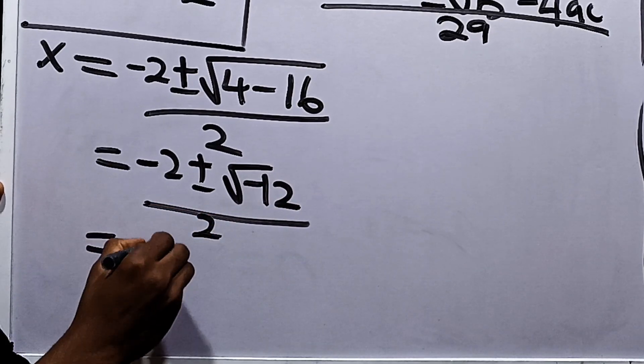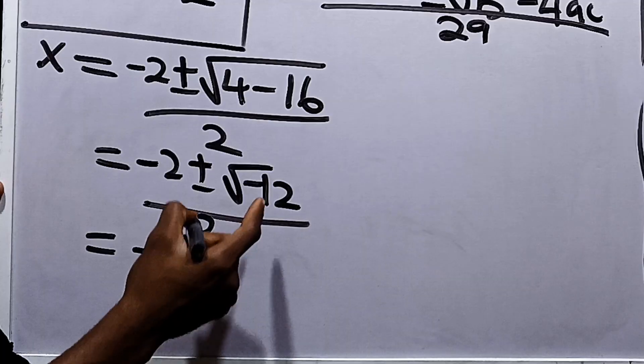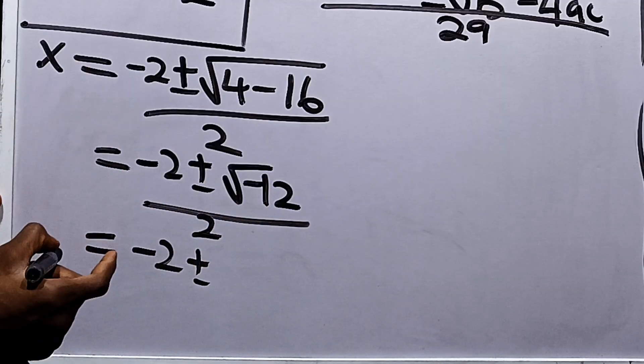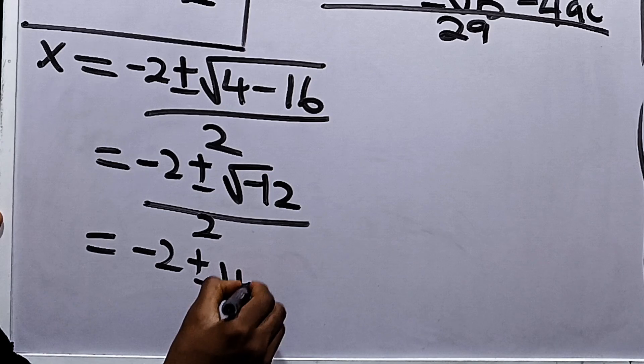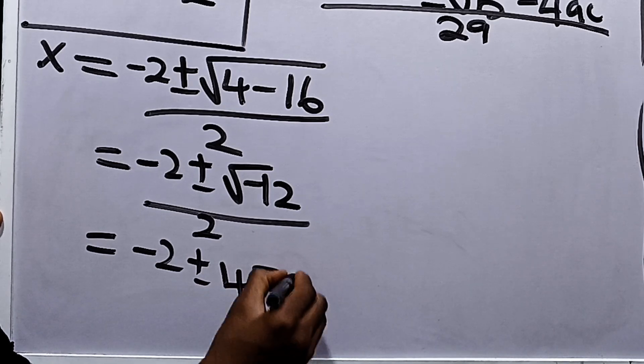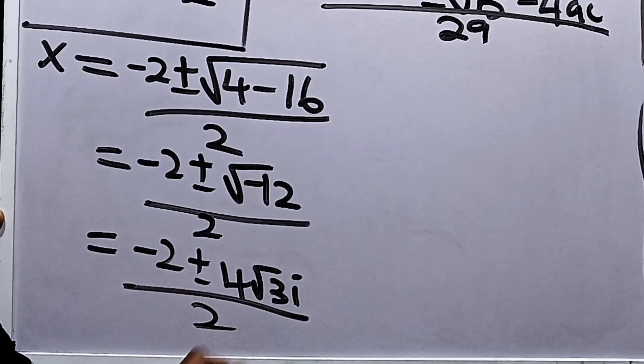This is equal to minus 2 plus or minus, root of 4 is 2, root 3, and root of negative 1 is i. So, we have 4 root 3i all over 2.